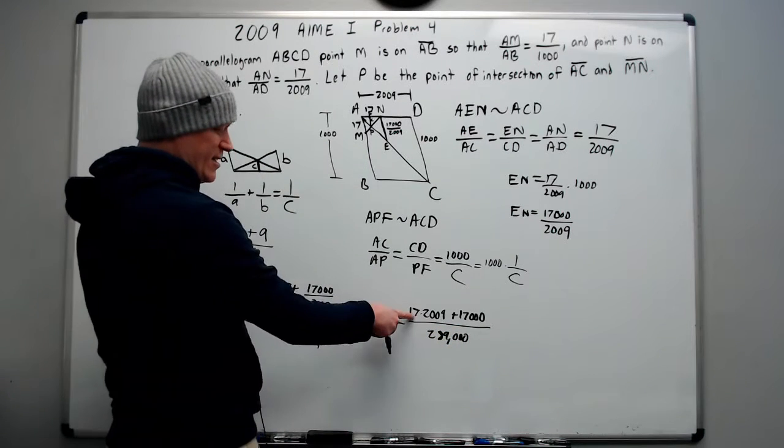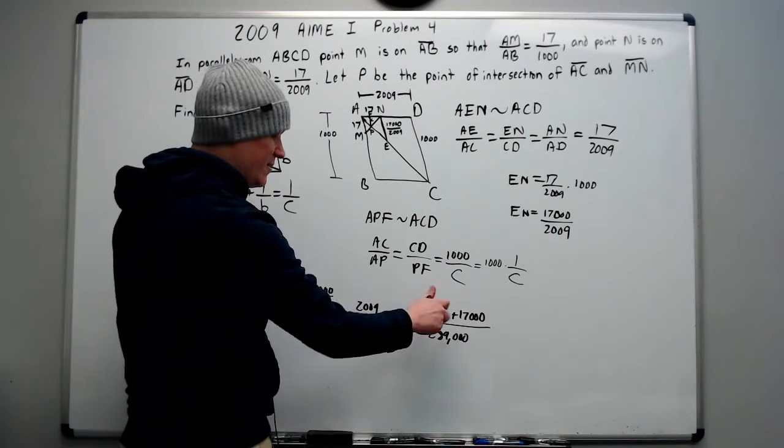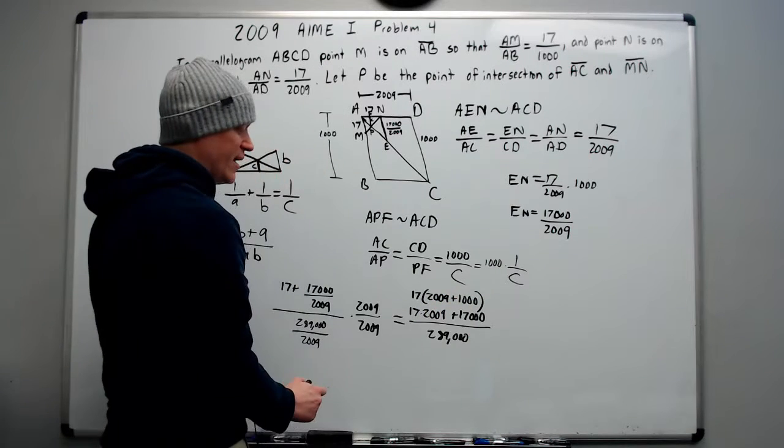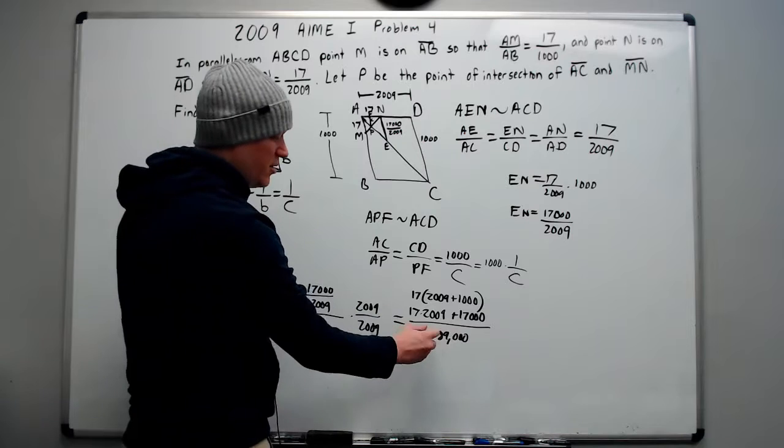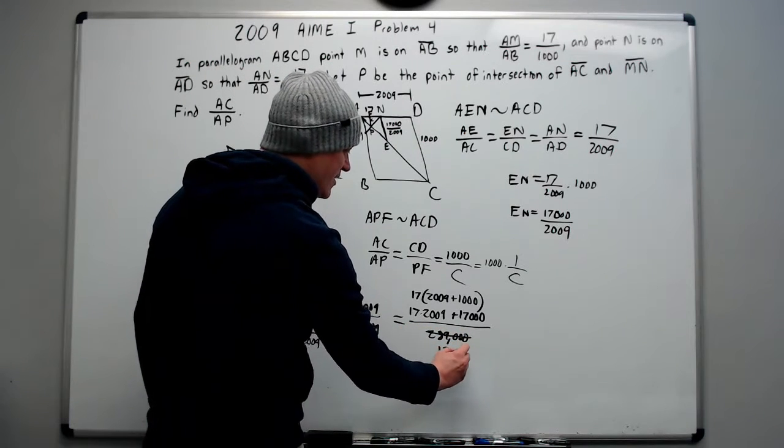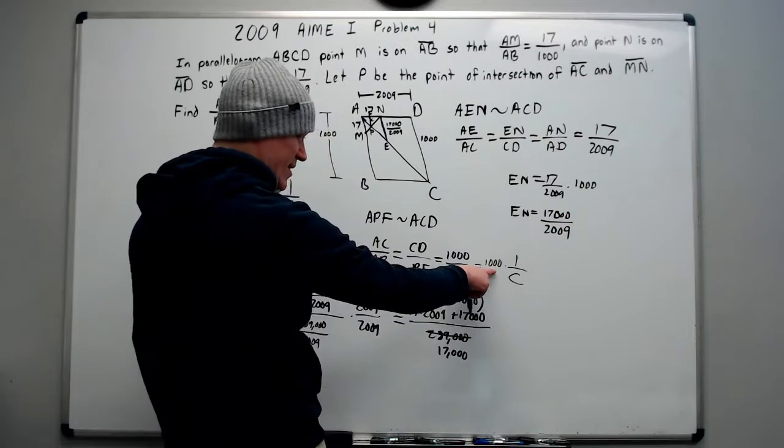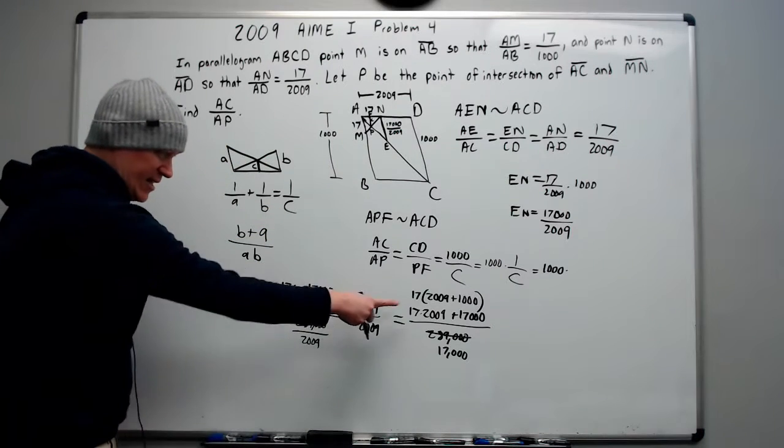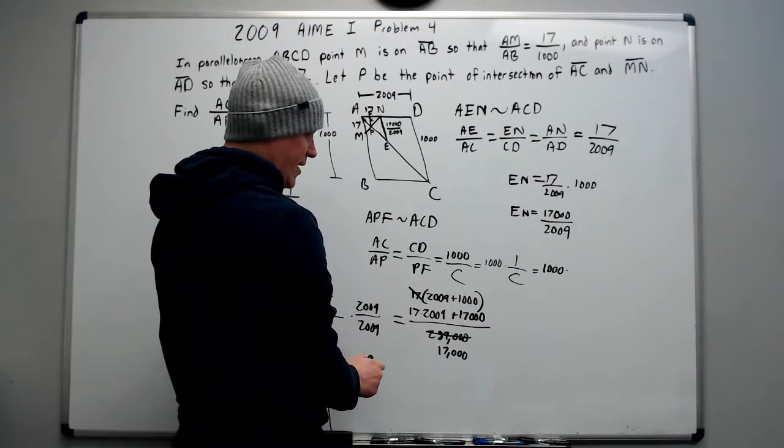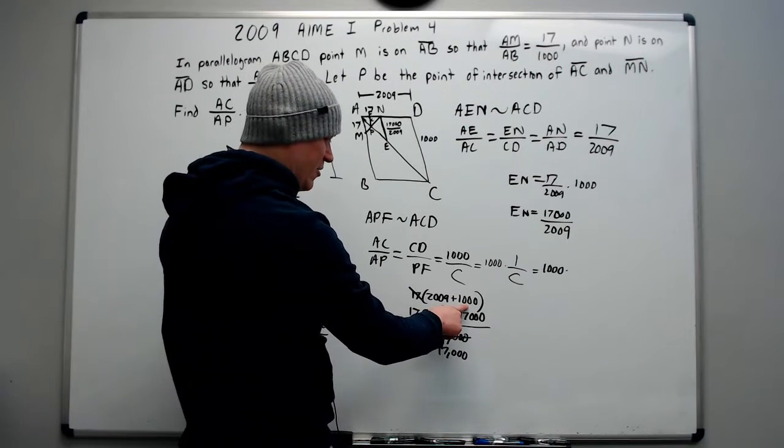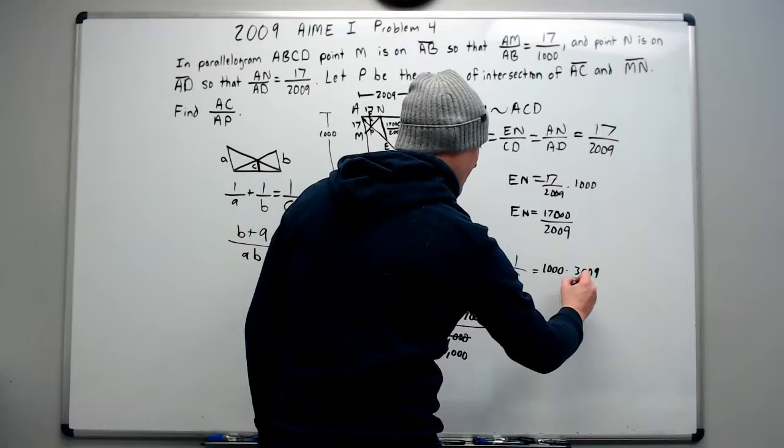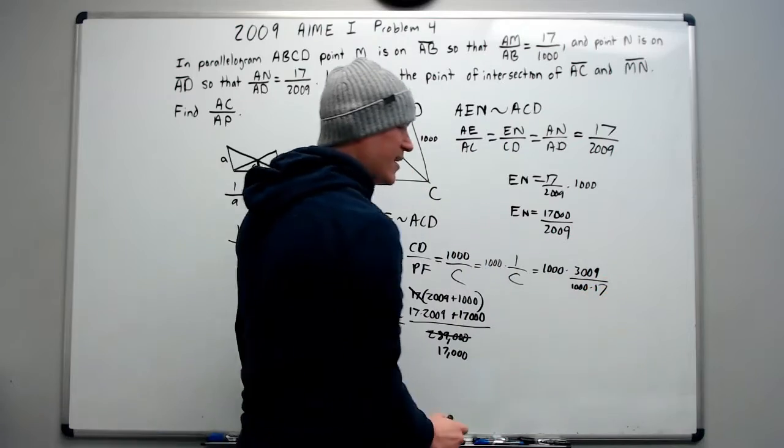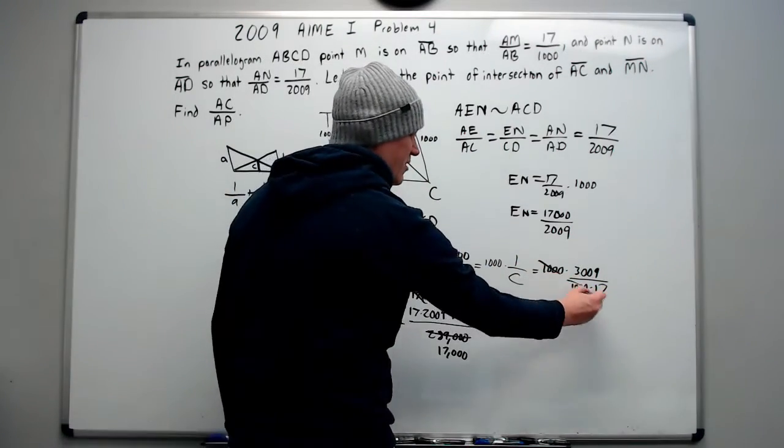And we're going to bank on hoping for that situation to occur, and it will. So 17 times 2009, here it cancels to give 17,000 over the 2009's cancel here to give 289,000. And we're good because this 17 can factor out with this 17 to give 17 times 2009 plus 1000. And this 17 will now cancel with the 289,000 to give 17,000. So now we can express this as 1000 times 1 over C.